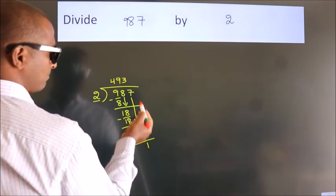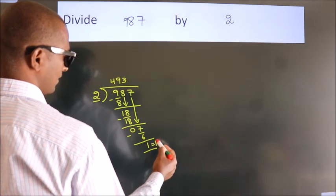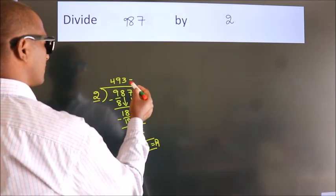After this, no more numbers to bring down. So we stop here. This is our remainder. This is our quotient.